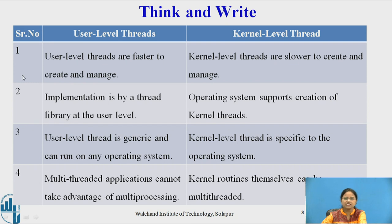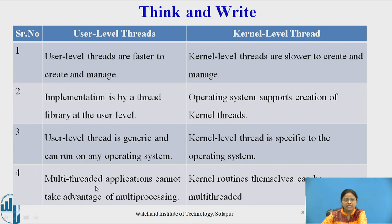Now let us see the difference between user level threads and kernel level threads. User level threads are faster to create and manage, while kernel level threads are slower. Implementation is by the thread library at user level, while for kernel threads, the operating system supports their creation. User level threads are generic and can run on any type of operating system, while kernel level threads are specific to the operating system. In user level threads, multi-threaded applications cannot take advantage of multi-processing, while kernel routines themselves can take advantage of multi-threading.